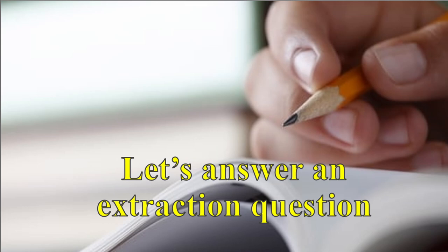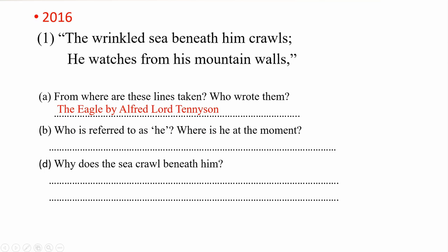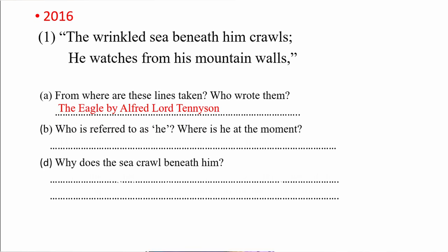Now let's answer an extraction question. I have taken a 2016 paper question. The lines are: 'The wrinkled sea beneath him crawls, he watches from his mountain walls.' The first question: From where are these lines taken, and who wrote them? Answer: The Eagle, by Alfred Lord Tennyson. Remember — you must use correct punctuation and capitalization exactly as it appears.